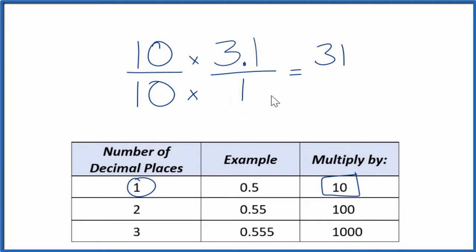So 10 times 1, that equals 10, and we have our fraction, 31 over 10.